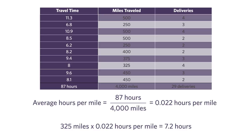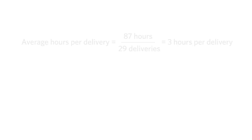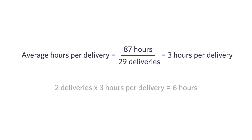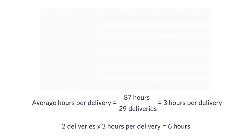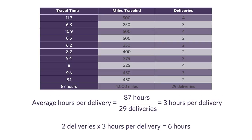Here's a problem. I have data not just on miles traveled, I also have data on number of deliveries, and I could use number of deliveries to estimate how long my truck will be gone. In this dataset my trucks were gone a total of 87 hours and combined they made 29 stops — that's three hours per delivery. So if I have a truck that's going to be gone making two deliveries, three hours per delivery times two deliveries, that's six hours.